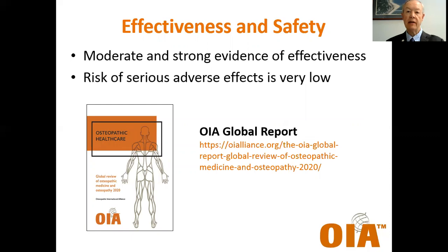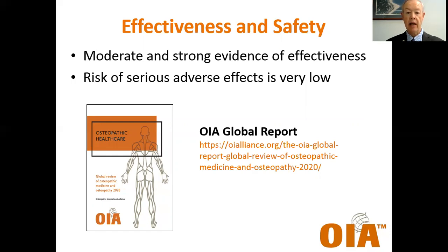The evidence for effectiveness of manual therapies is growing and becoming more robust. There is moderate and strong evidence for pain relief and improving function in low back, neck, and shoulder disorders, and headaches. There is a growing positive evidence base of beneficial effects for hip and knee osteoarthritis, heel pain, length of hospital stay in preterm infants, irritable bowel syndrome, lymphatic drainage as part of breast cancer care, and infantile colic. Tables of evidence and extensive references may be found in the OIA's global report, available at the URL shown on this slide.